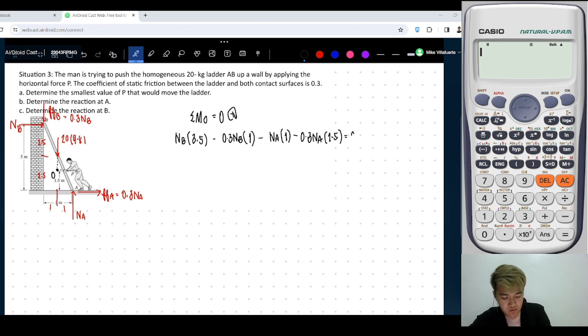So we have equal to 0. So NB, that is equal to... Let's simplify. Negative 1 minus 0.3 times 1.5, that is negative... Sorry. Negative 1.45 NB. NB, sorry.